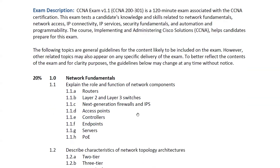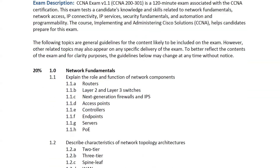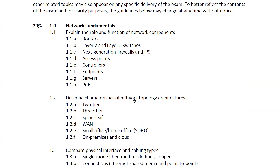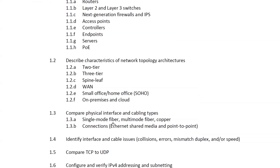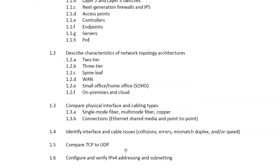The first module is about network fundamentals, where you'll learn about the role and function of different network components like routers, switches, firewalls, access points, controllers, and endpoints. You'll also be tested on network topology architectures such as two-tier, three-tier, spine and leaf, SOHO architecture, and on-premises cloud. Additionally, you'll cover physical interface and cabling types including single-mode, multi-mode, and copper cables, as well as how to identify interface and cable issues.